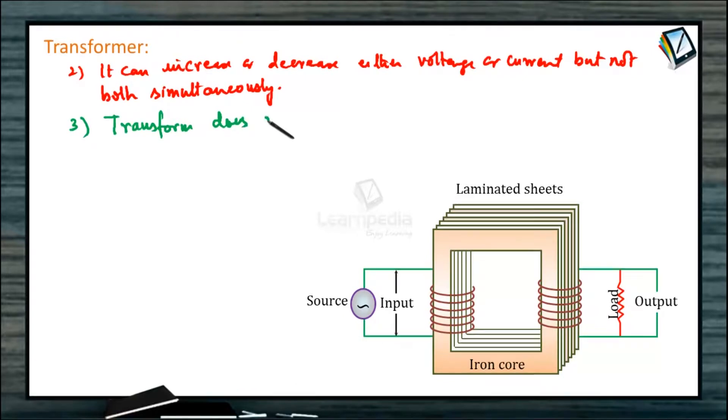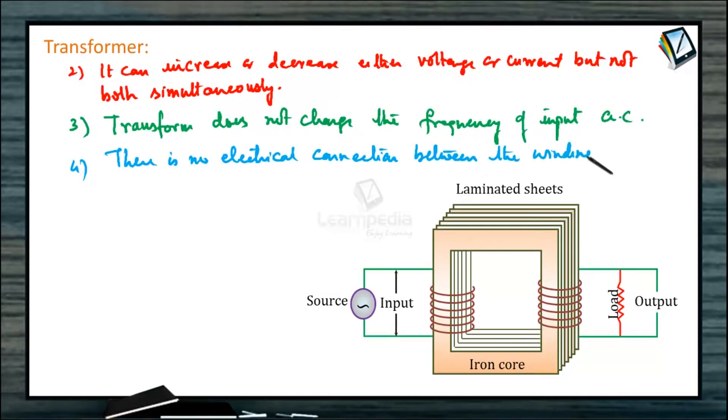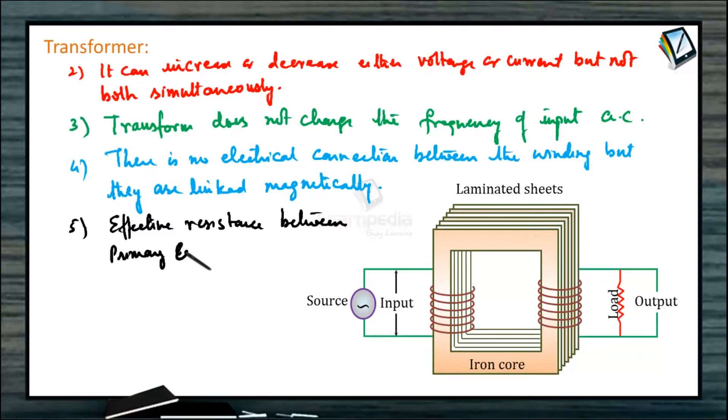There is no electrical connection between the windings, but they are linked magnetically. The effective resistance between primary and secondary windings is infinity. The flux per turn of each coil must be the same.